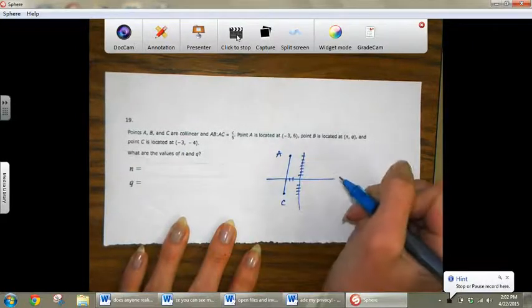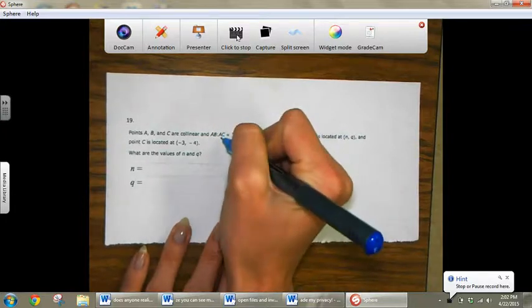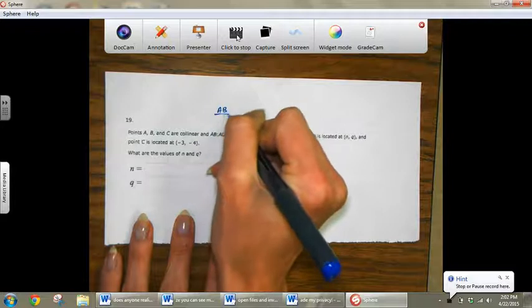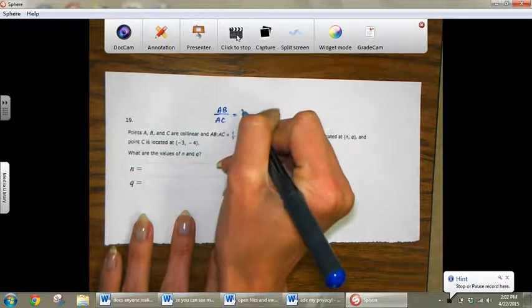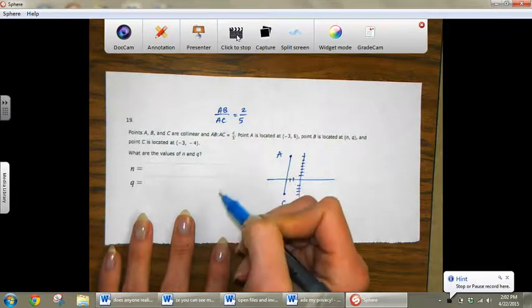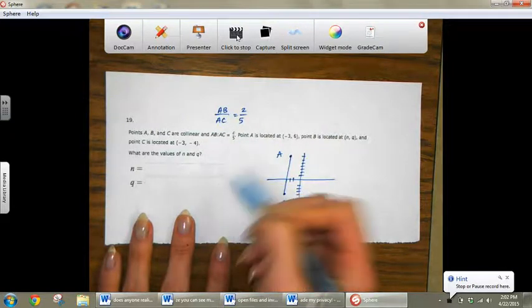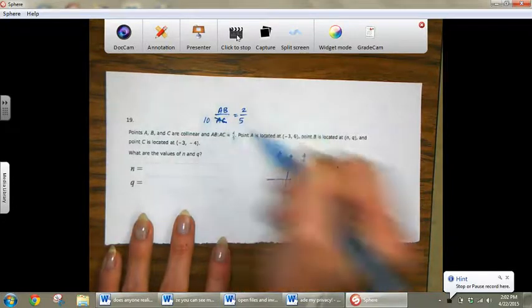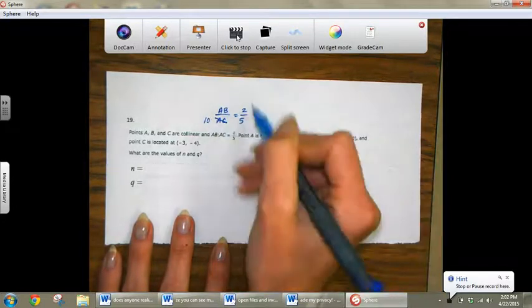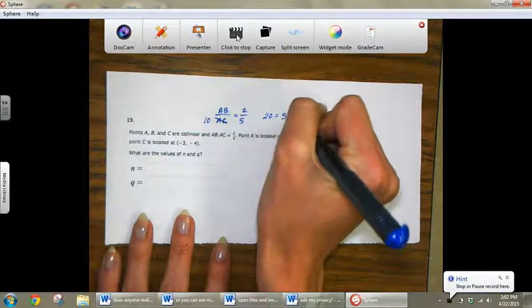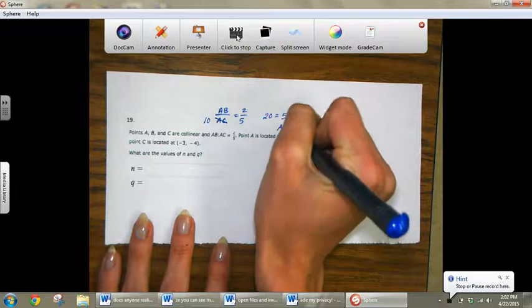What I did first is I actually took AB colon AC and I rewrote it as AB over AC and said that was equal to 2 over 5. That's a 2, in the packet it didn't copy correctly. I now know what the actual value of AC is. AC is actually equivalent to 10. I can do some cross multiplication and find out that 20 equals 5AB, so AB is equal to 4.